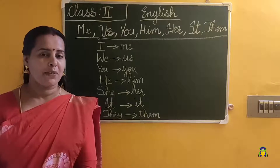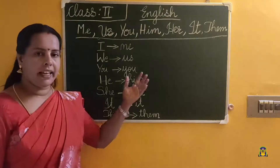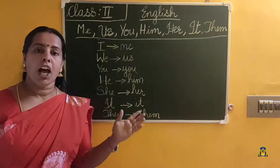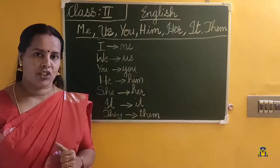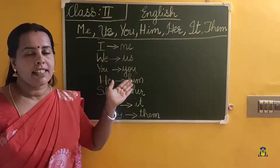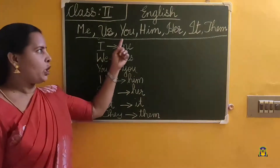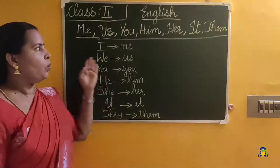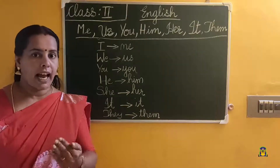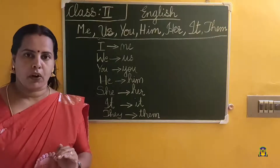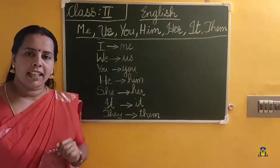Which are the object pronouns we studied? Me, us, you, him, her, it, them. All these are object pronouns. These pronouns receive an action. We will not begin a sentence with these pronouns except you and it. With you and it we can begin a sentence. With all other object pronouns, we will not begin a sentence. They are receiving an action, so we will not begin the sentence with object pronouns.